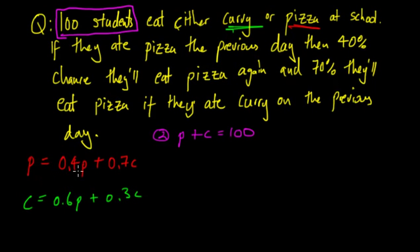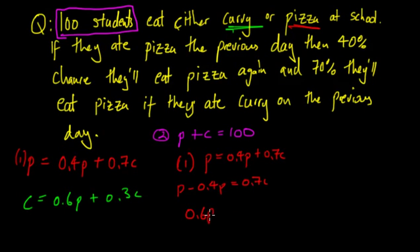So now we'll take one of these equations, we'll take this one for p. So p equals 0.4p plus 0.7c. Take this to the other side and we get p minus 0.4p equals 0.7c, and that's 0.6p equals 0.7c.